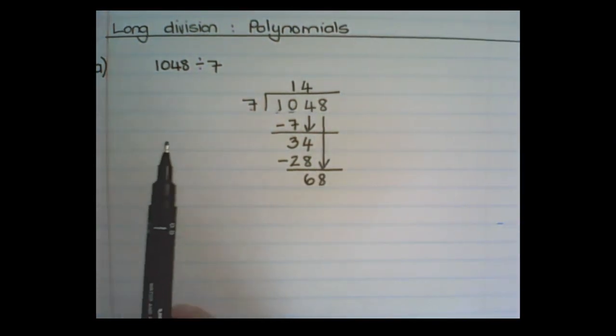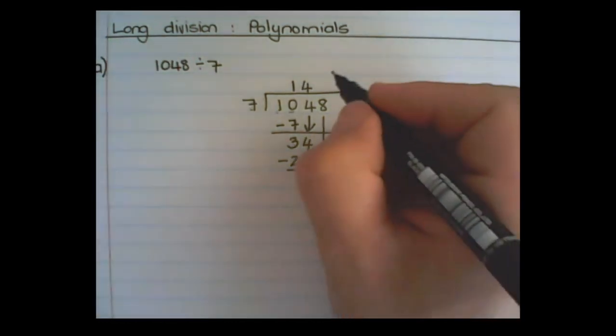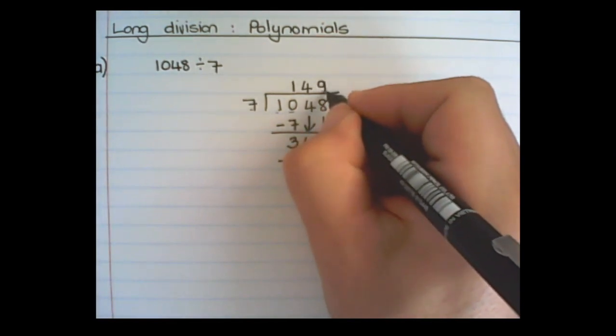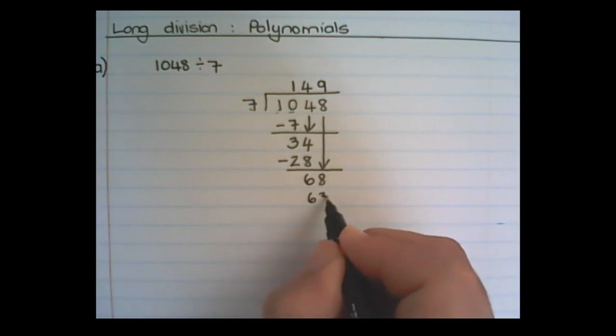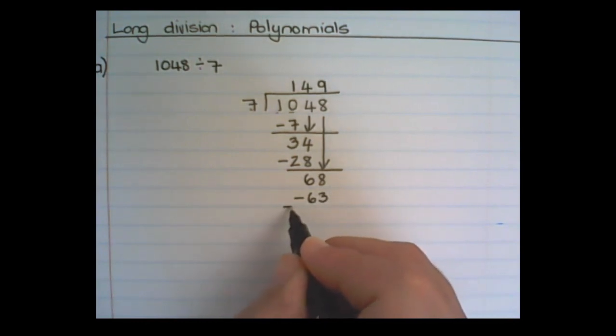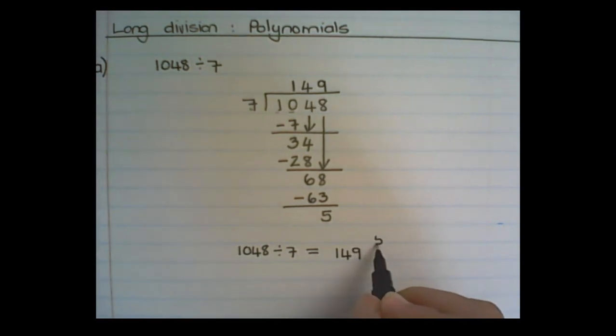Then 7 goes into 68, 9 times. And 9 times 7 is 63. And that is what I subtract. And therefore, I have a remainder of 5. Because 7 cannot go into 5. So 1048 divided by 7 is 149 and 5 parts of 7 remaining.